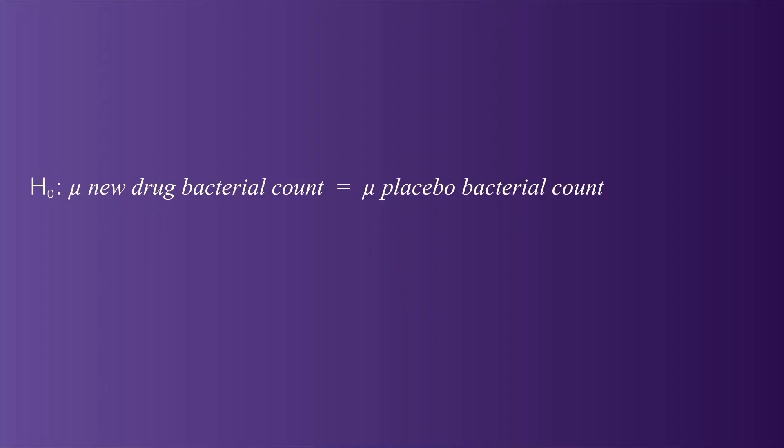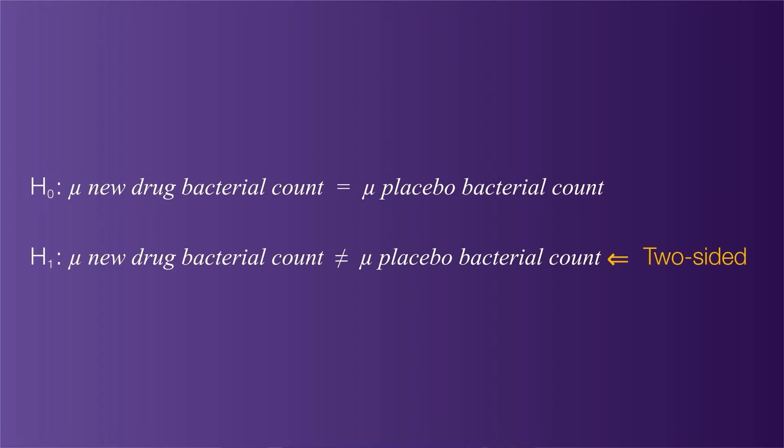Let's say you choose the typical type 1 error rate of 5%. This means you will reject the null hypothesis when the difference is so large it would only occur 5% of the time by random chance.